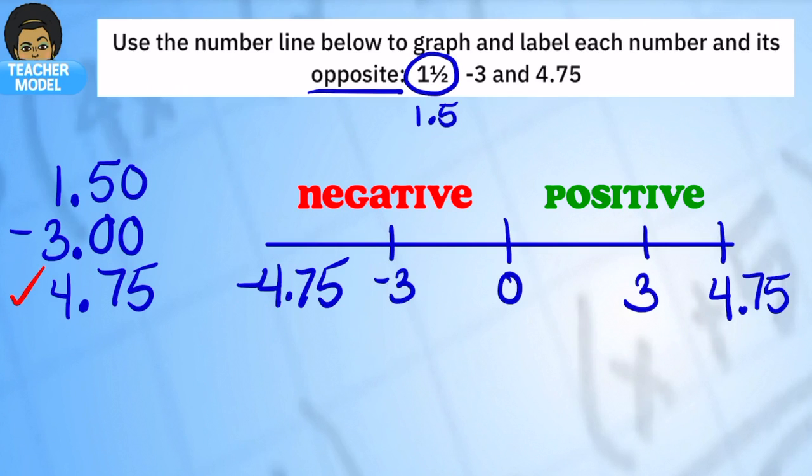So here's negative 3 and there is 3, and that leaves us with 1.5. So I'm going to start with the positive and notice I'm going to write it as 1½ and 1.5, and its opposite. Notice if it is between the zero and the 3, its opposite is going to be between zero and negative 3.